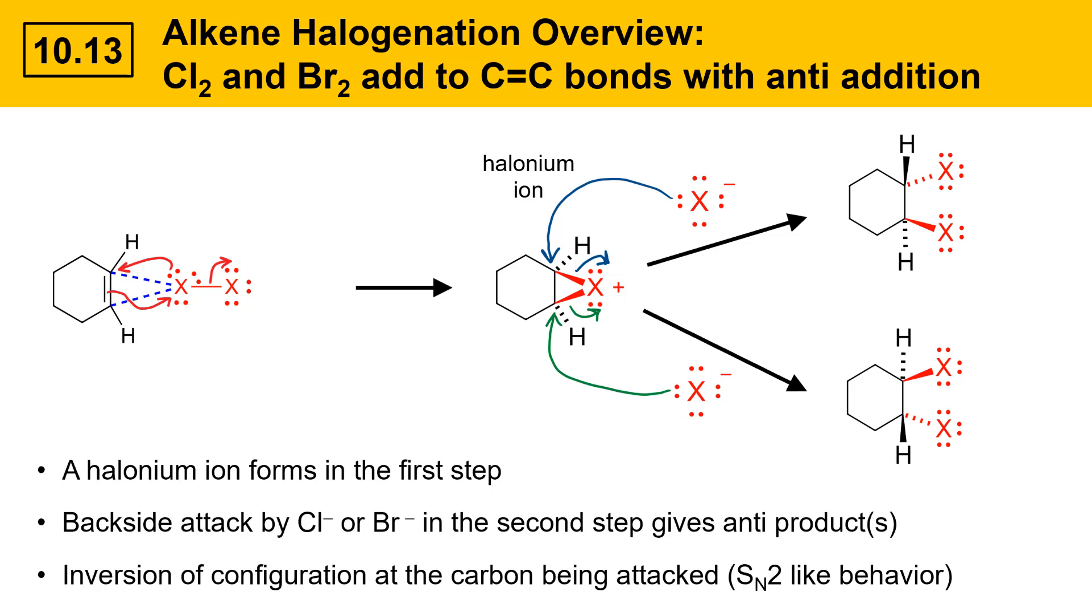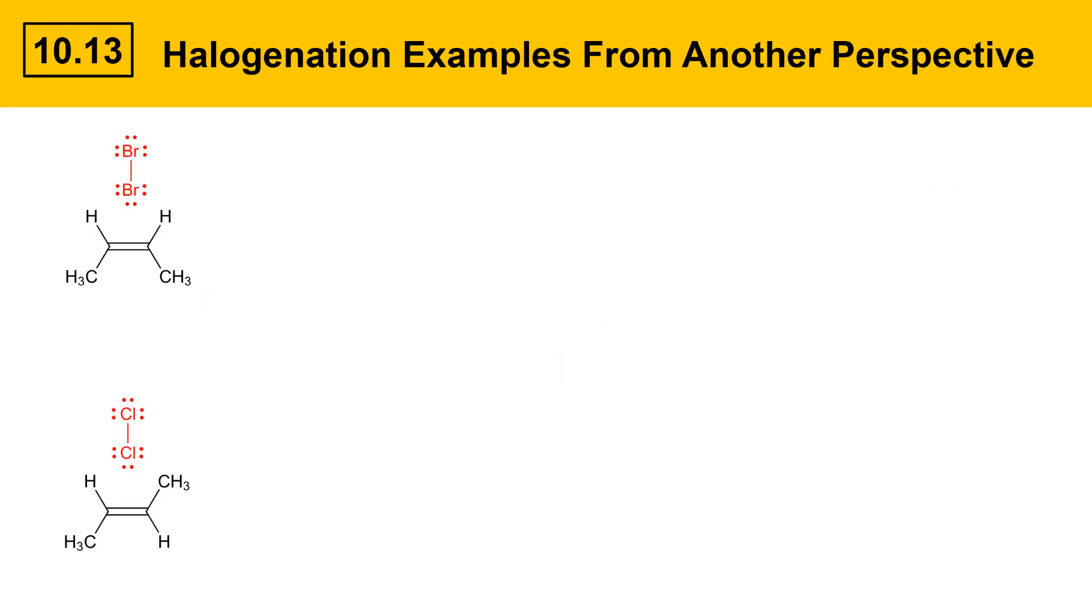This slide has a couple of examples of halogenation reactions from a different perspective. These are going to show the halonium ion in the plane of the screen. In the upper example, we've got cis-2-butene reacting with bromine.